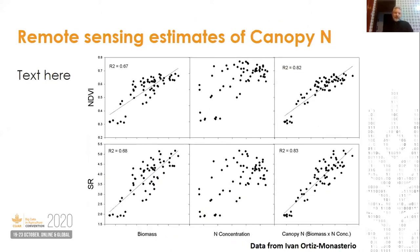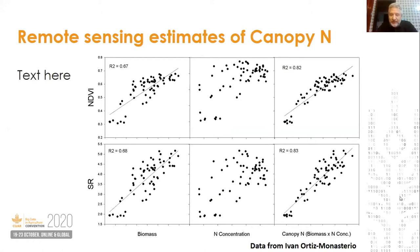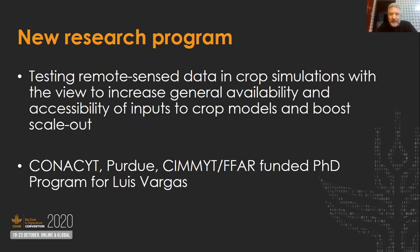Here's another example using two spectral indices — NDVI and the simple ratio. Total canopy nitrogen is actually very well predicted by these simple indices. We're starting a new research program with Davide at Purdue and a Mexican PhD student to test the hypothesis that we can get much more mileage and make many more datasets model-friendly by implementing high-throughput approaches.